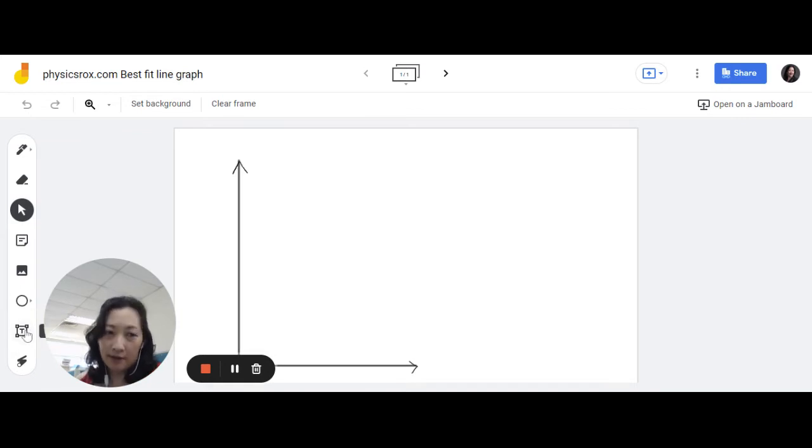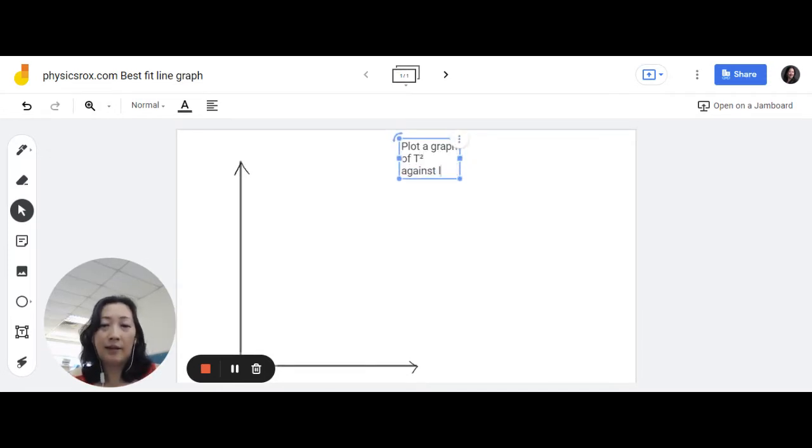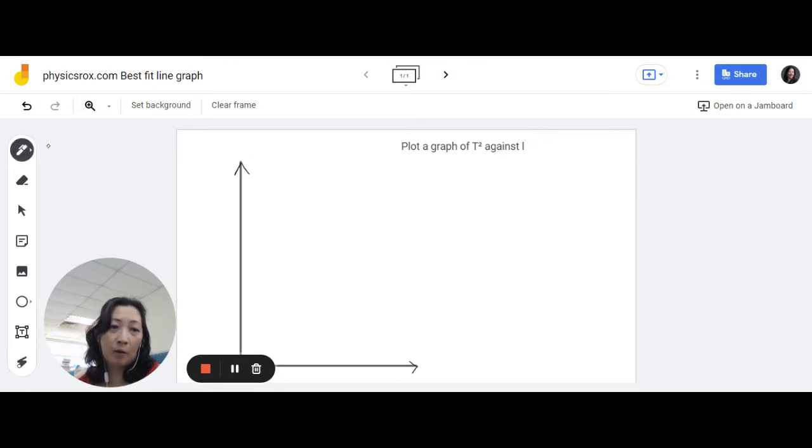Now, when plotting a graph, depending on what the question asks, like if the question asks you to plot a graph of t squared, let me just get the power symbol because I am very fussy about this against L. Remember that the first variable here is on the y-axis and the second one's on the x-axis.